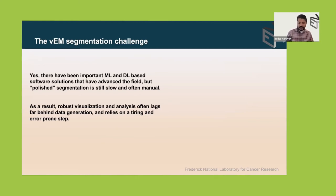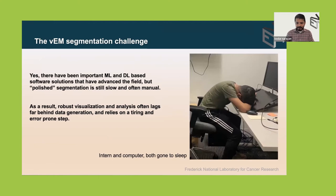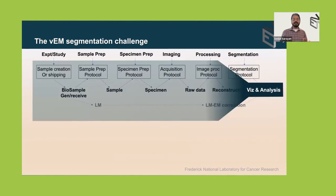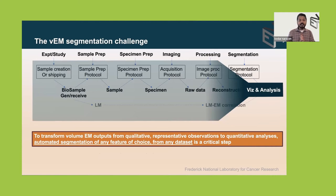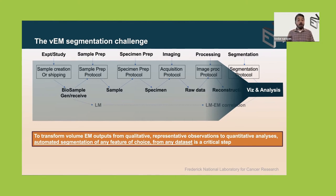There have been important machine learning and deep learning based software solutions that allow automated segmentation, but the fact is it's still slow and manual. Often segmentation is given to an intern and is the rate-limiting step — slow, manual, and frankly boring. As a result, many technological advances have left behind this analysis and visualization step. To transform volume EM from representative qualitative observations to quantitative analyses, automated segmentation of any feature of choice from any volume EM dataset is a critical step.